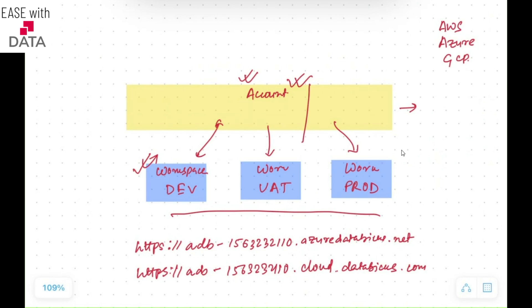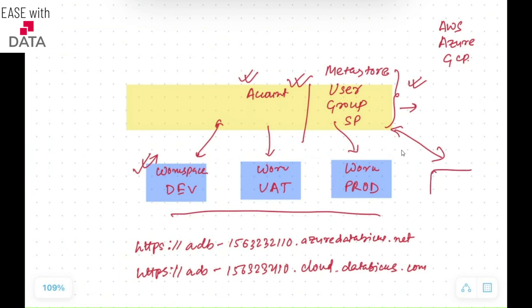At the account level, you can do a lot of things. You can create Metastores and assign those to different workspaces, or you can have users, groups, or service principals assigned to different workspaces. We are going to discuss all of them separately. For now, you just need to know you can manage all of this at the account level and assign them accordingly to different workspaces as per the requirement. This is how the architecture works — you have an account and you can have different workspaces linked to and managed through the same account.